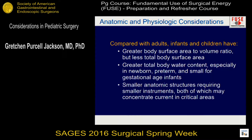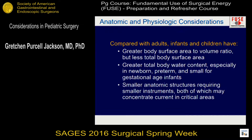Infants and children, especially infants, have a lot more total body water. Tissues with more water are low resistance and conduct current very well. An adult has about 60% total body water. A newborn infant has about 75%, and a preterm infant can be as high as 83–85%. So the tissues are going to conduct current very well and the current distribution can be unpredictable.